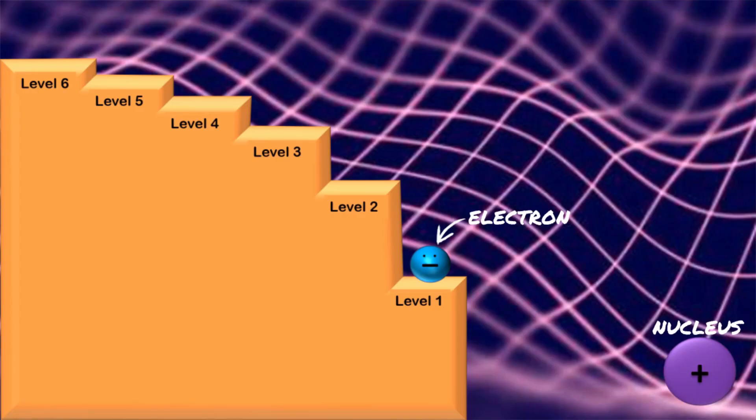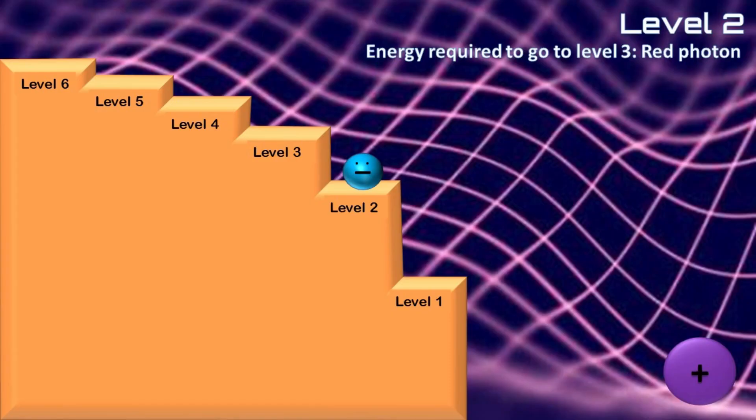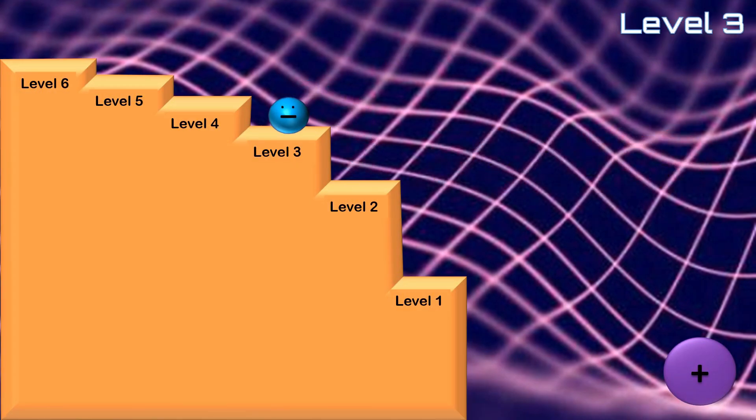To understand why, let's see what's happening in the hydrogen gas at an atomic level. Imagine the atom as a staircase with the stairs representing orbits. The electron needs some energy to go up the staircase, and that energy can be in the form of light. When the right photon strikes the electron, the electron jumps to the next level.